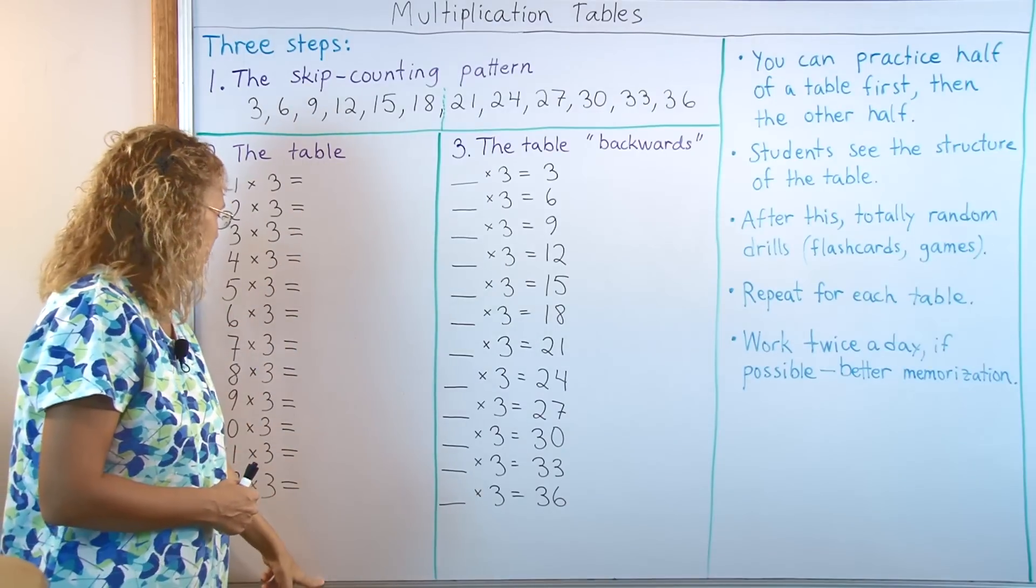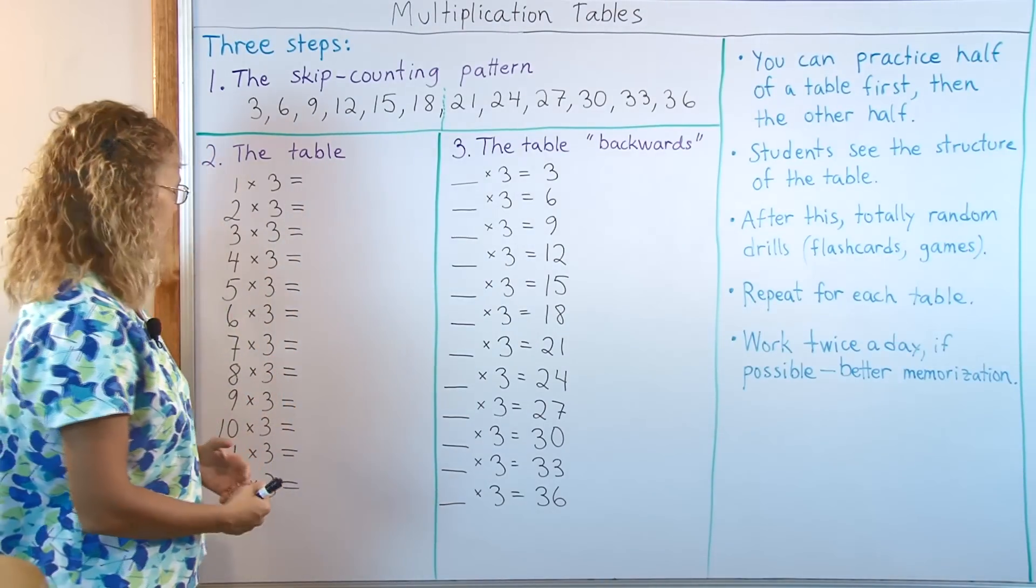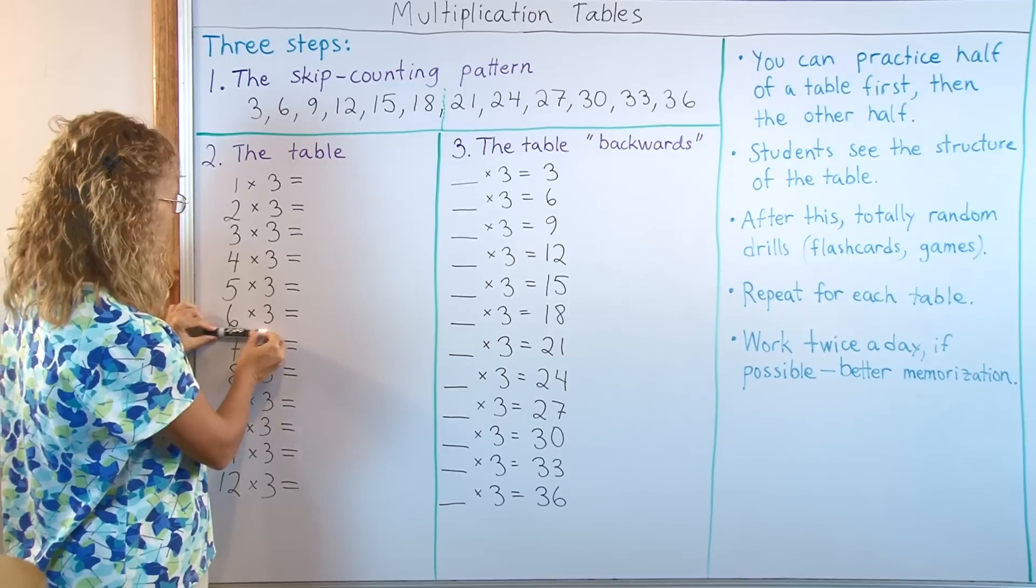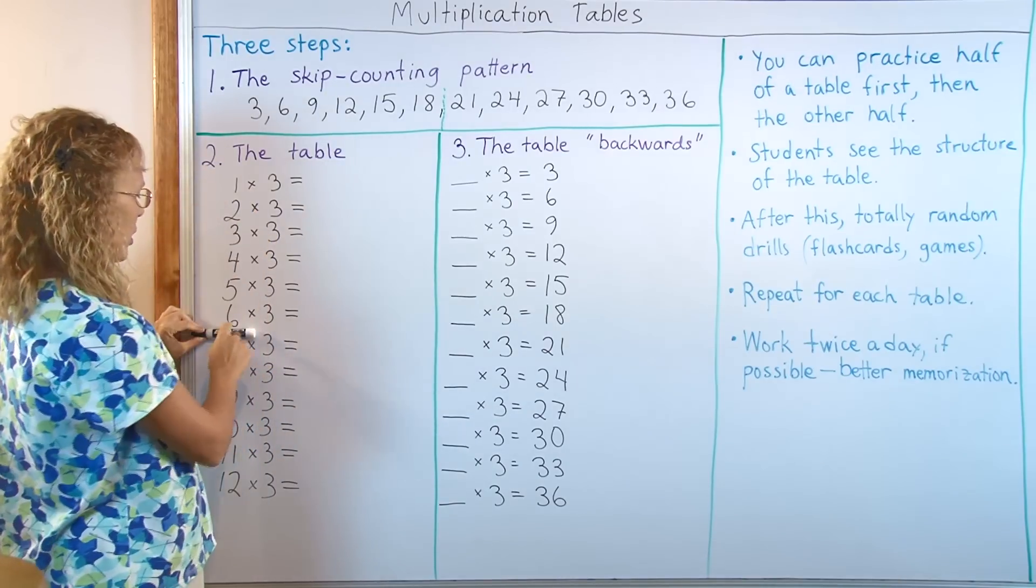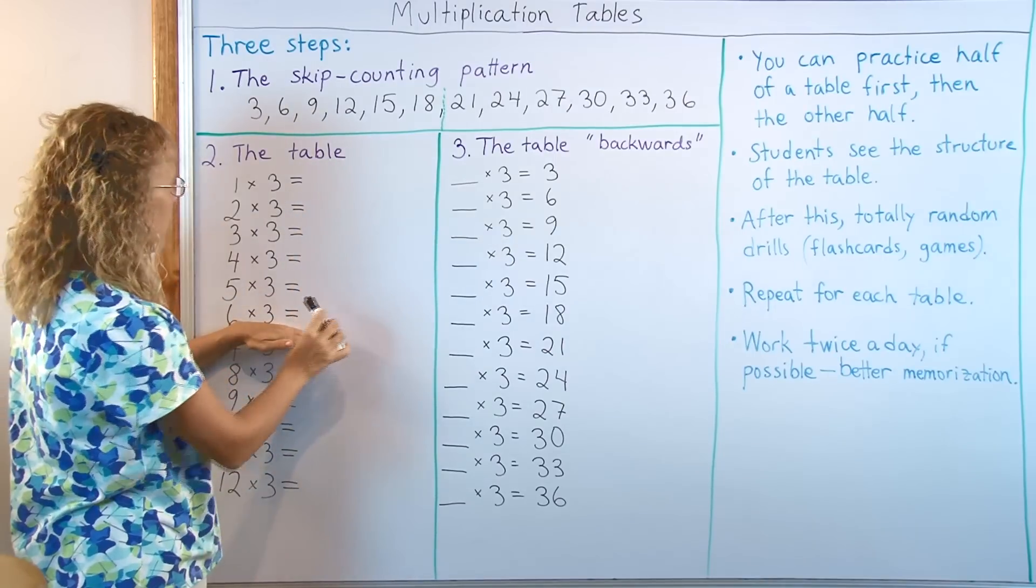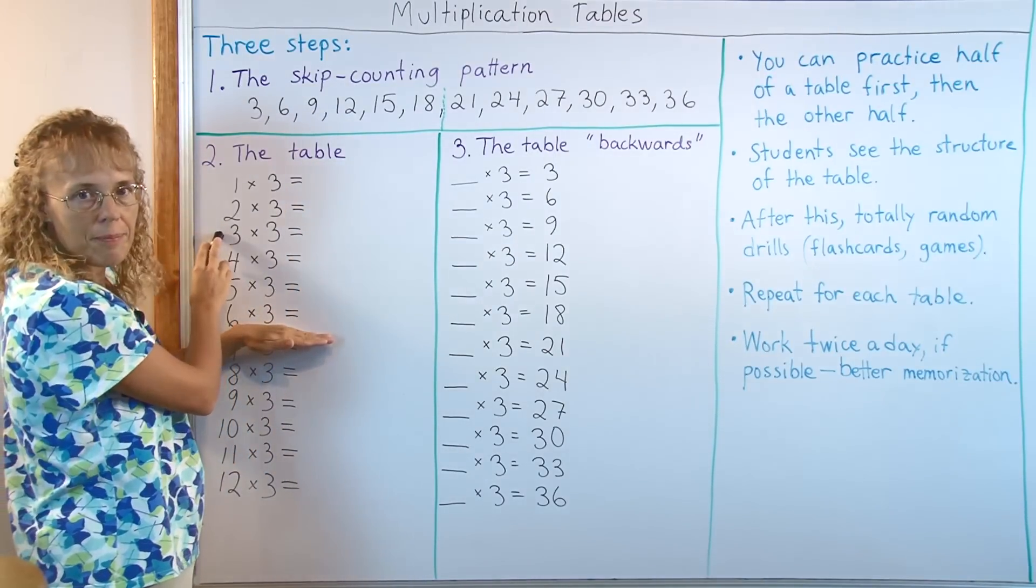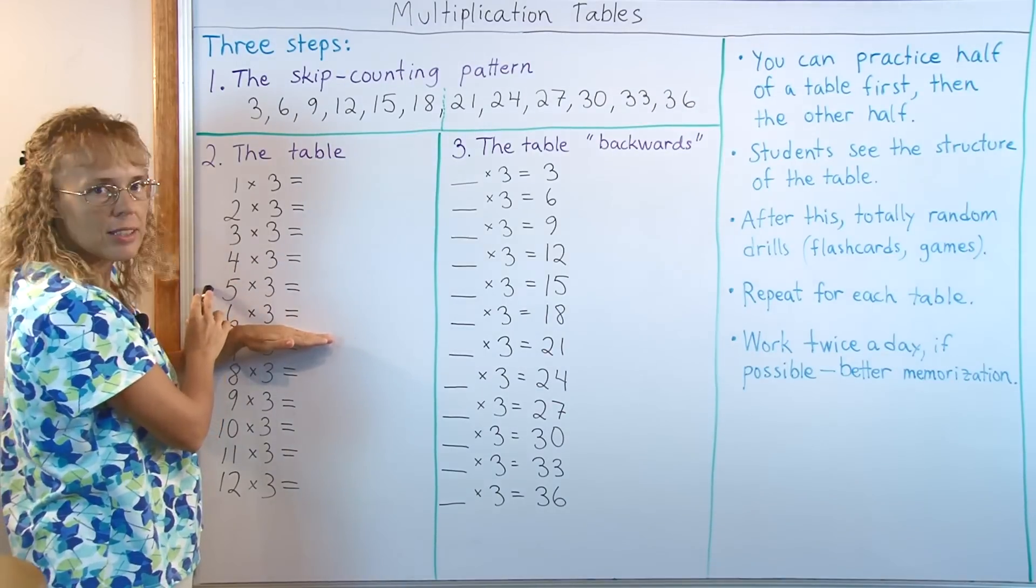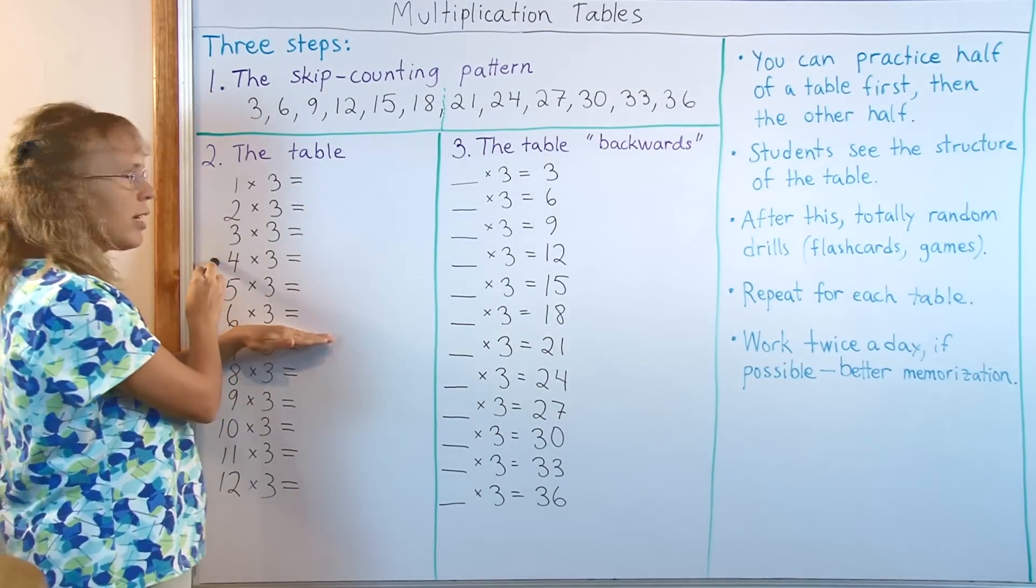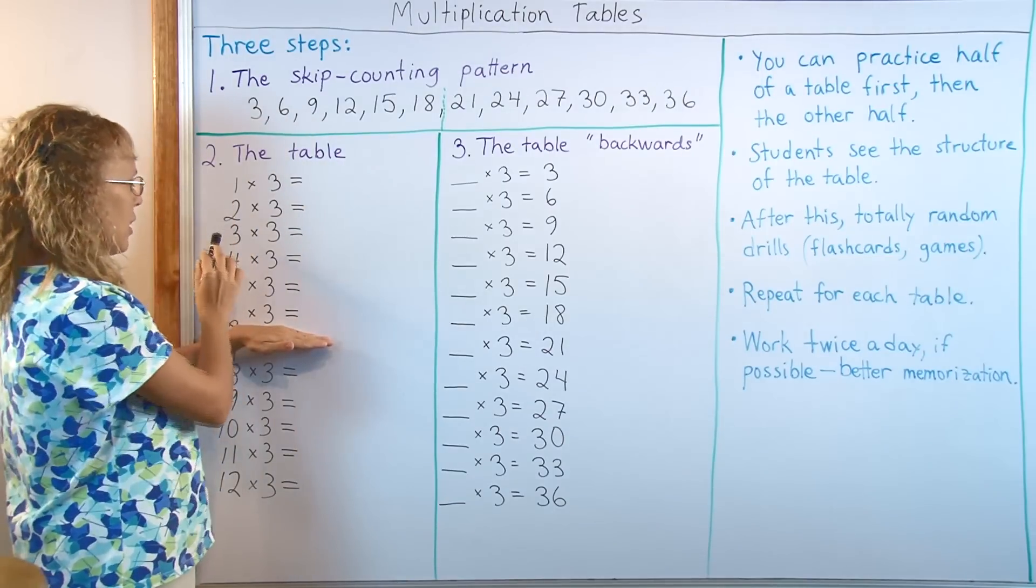Once they understand that then you can start drilling randomly. For example, maybe you want to start with the first half up to 6 times 3. The answers are not visible here but you point to problems. For example: 3 times 3? 9. 5 times 3? 15. 4 times 3? 12. 1 times 3? 6 times 3? Like that.